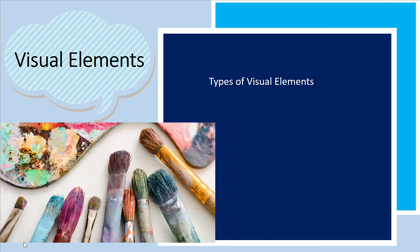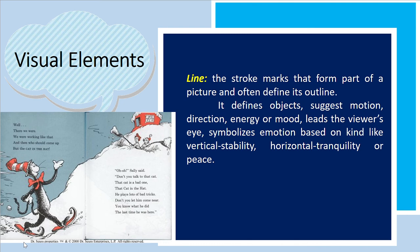The types of visual elements are line, color, shape, texture, and composition. Line refers to the stroke marks that form part of the picture and define its outline. It defines objects, suggests emotion, direction, energy, or mood, and symbolizes emotion based on type — vertical for stability, horizontal for tranquility or peace. Lines are specifically emphasized in picture books for children. Take a look at the example of the Cat in the Hat by Dr. Seuss, where the image of a cat is formed through line.